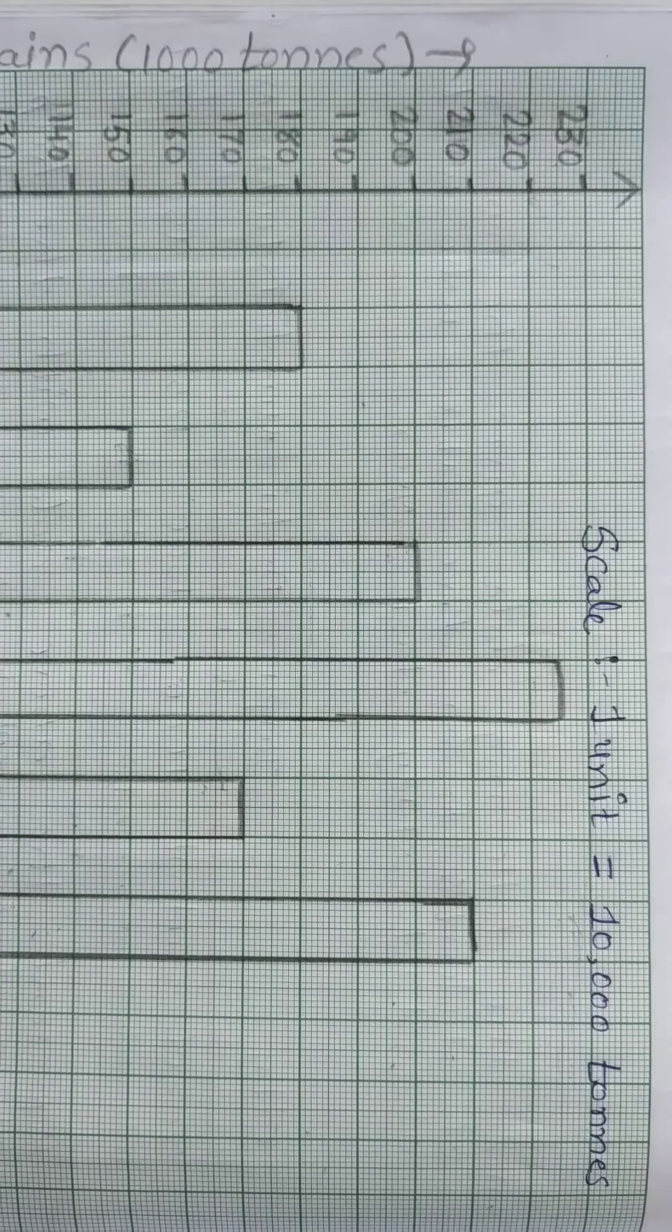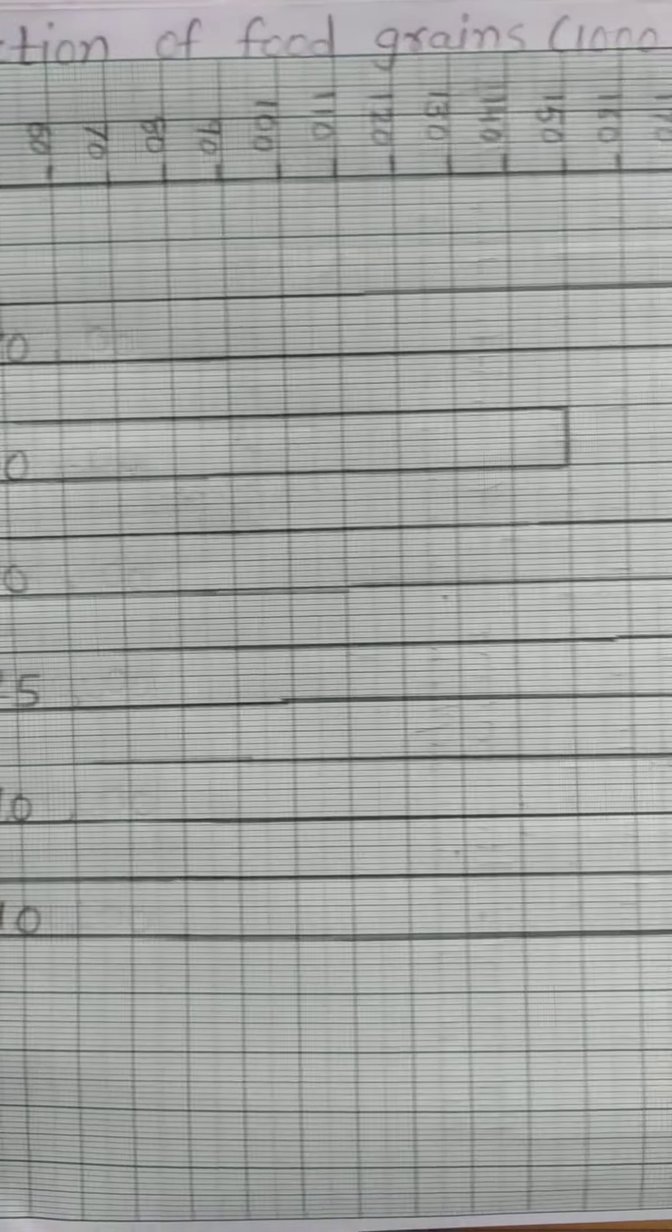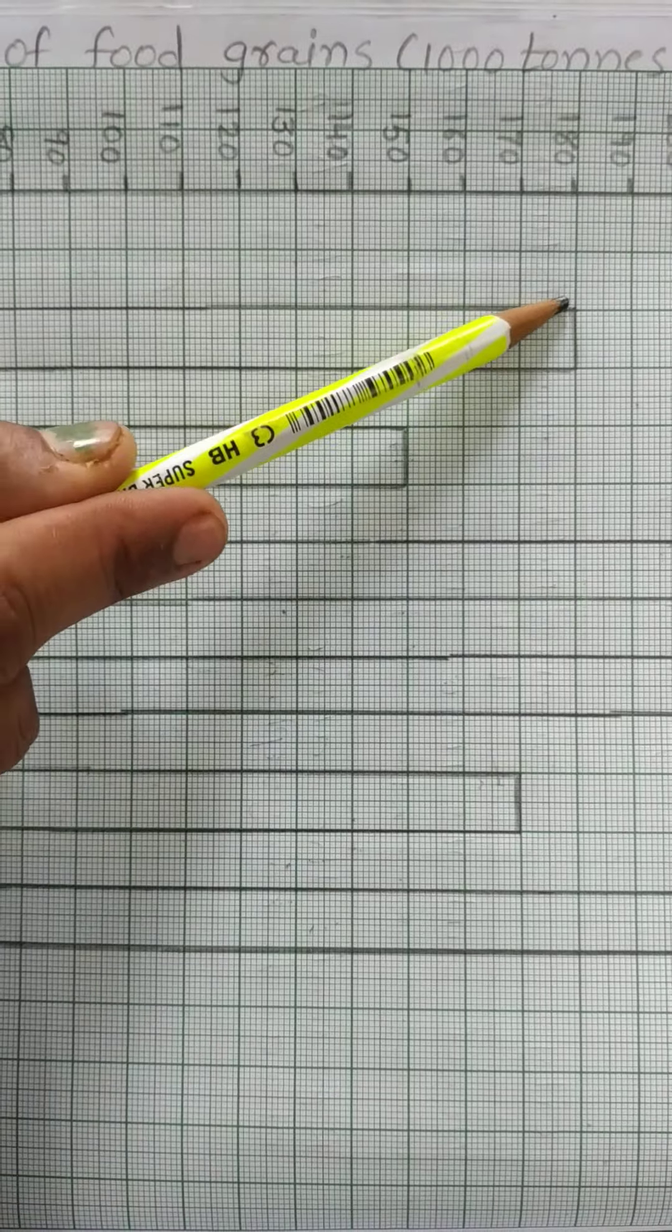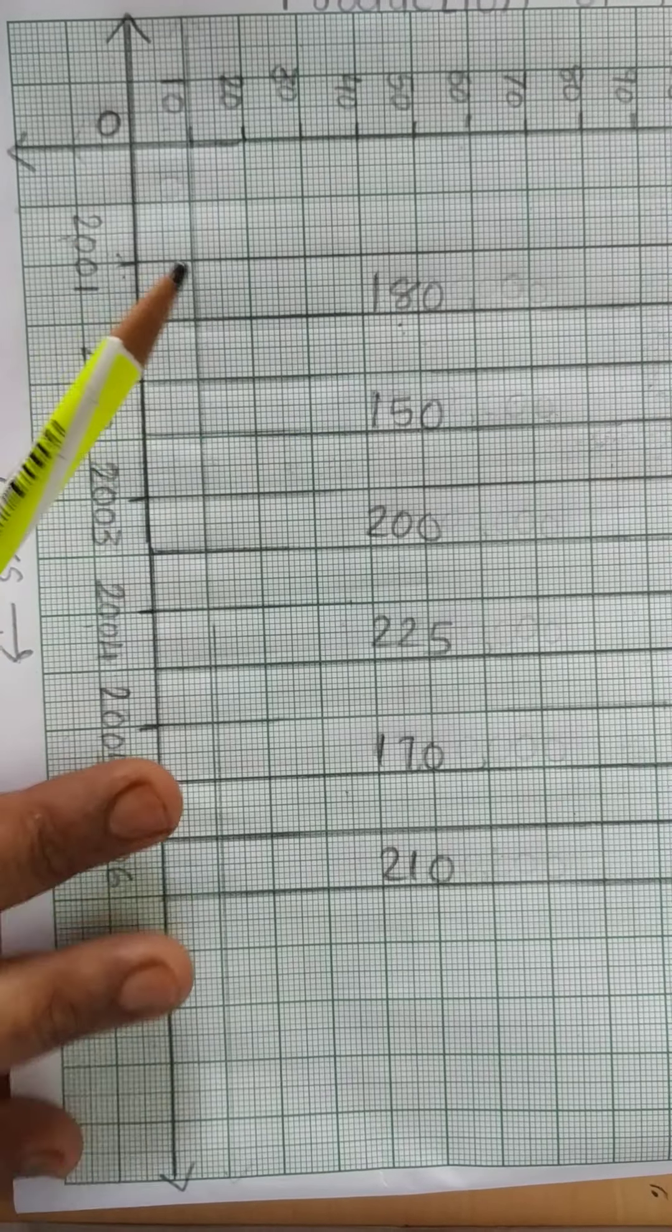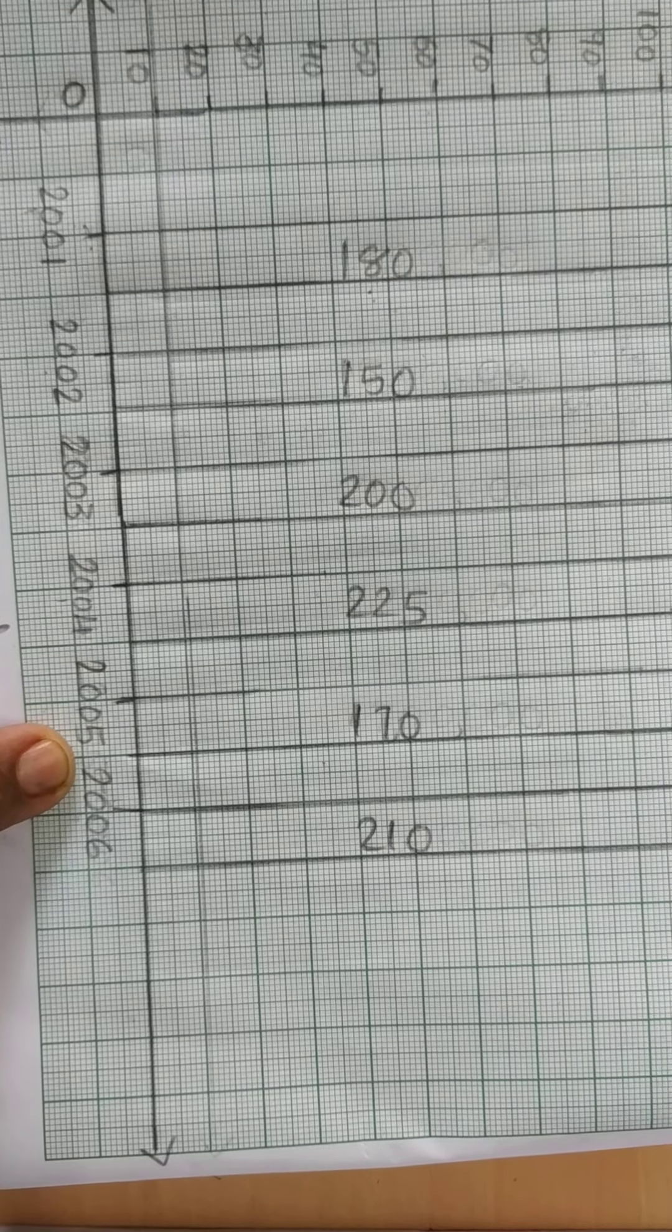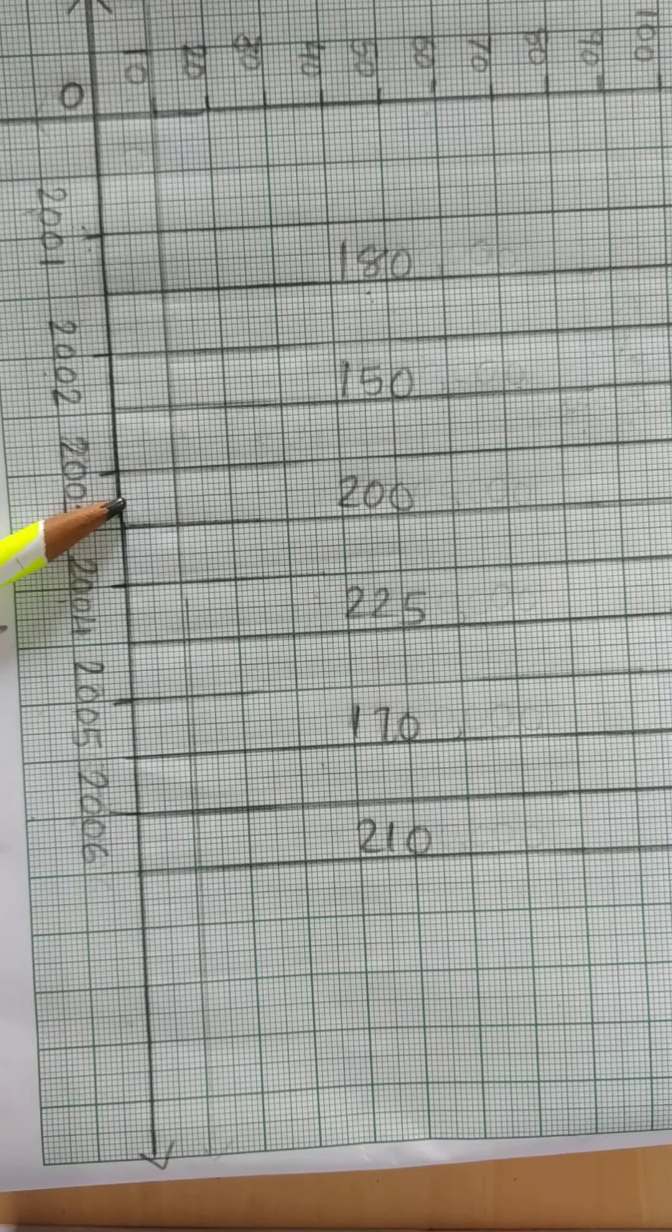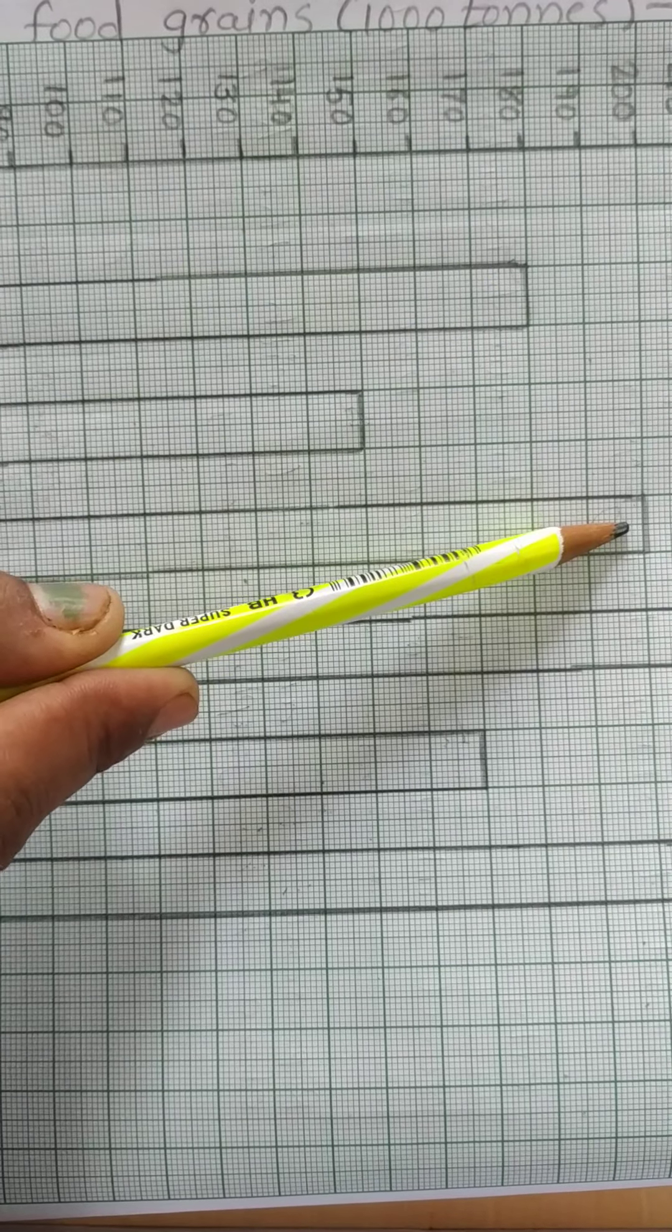2001 you can see 180, so start from 0 and 180 is here. Then 2002 is 150, so start from 0, 150 is here. 2003 is 200, start from 0, 200 is here. You can see number 3 here right.